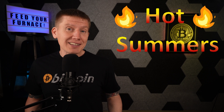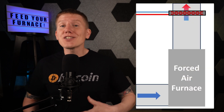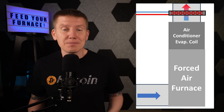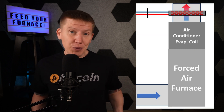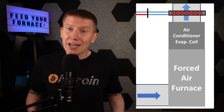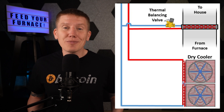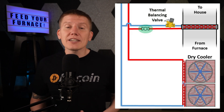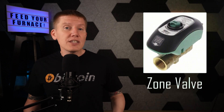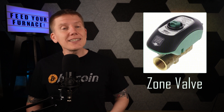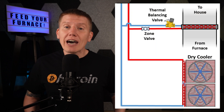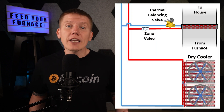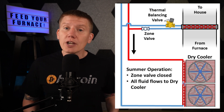Another part of this system to think through is what to do during the summer months. Most likely, the ducting of your forced air heating system is also the ducting of your air conditioning system. It's going to be really important to shut off any fluid from flowing through the radiator, or you might be heating your house when you don't want to. Thermostatic valves are not made to completely cut off fluid flow, so you'll need another valve in line to completely isolate the radiator. This is what zone valves are made for — simple electrically operated valves designed to stop fluid flow to different parts of a hydronic or hot water system. Inserting a zone valve in front of the radiator should isolate it so all fluid is directed to the dry cooler during summer months.